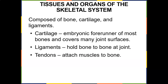Tissues and organs of the skeletal system — what is the skeletal system composed of? Bone, cartilage, and ligaments. Cartilage is the embryonic forerunner for most bones and covers many joint surfaces. We talked about the difference between hyaline cartilage, elastic cartilage, and fibrocartilage in the last lecture. Ligaments hold bone to bone, and tendons attach muscle to bone.